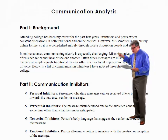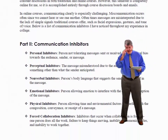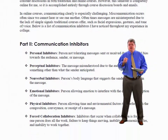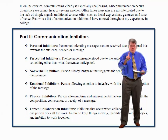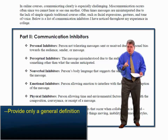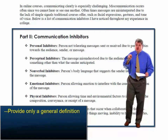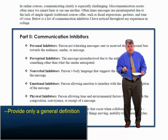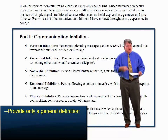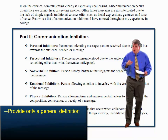Now comes part two: the list of communication inhibitors. There are several things that students sometimes get wrong. Thing number one is that you don't provide a general definition. In this list of communication inhibitors, I'm looking for a general definition — not a definition that applies to your workplace or the problems you found. I want a textbook, dictionary-type definition. You can't plagiarize, so you have to read all the sources I gave you and come up with your own definition that makes sense.